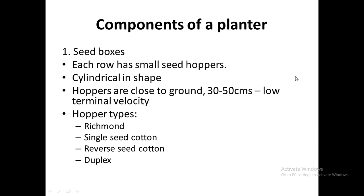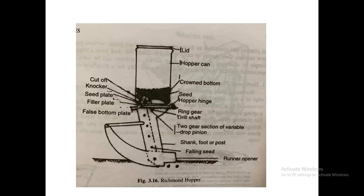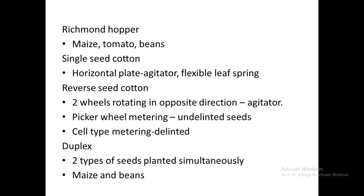There are different types of seed hoppers: the Richmond hopper, the single seed cotton hopper, the reverse seed cotton hopper, and the duplex hopper. The Richmond hopper is generally used for maize, tomato, and beans. The single seed cotton hopper has a horizontal plate fitted with an agitator and a flexible leaf spring for preventing clogging of seeds in the seed metering mechanism.